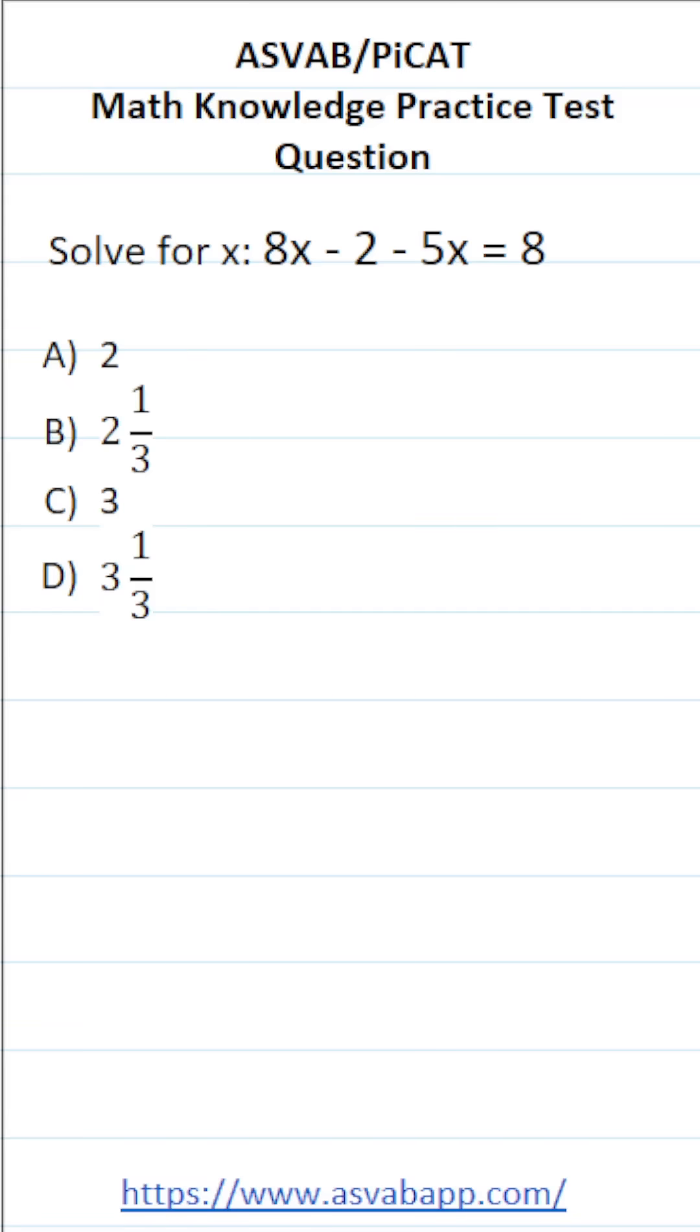This arithmetic reasoning practice test question for the ASVAB and PiCAT says solve for x: 8x minus 2 minus 5x equals 8.